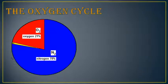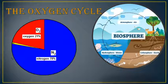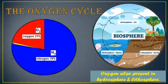Oxygen forms 21% of the atmosphere, and the rest is other gases. It is also present in the hydrosphere and lithosphere. Hydrosphere means water, lithosphere forms the earth, and atmosphere means the mixture of gases that is air. So oxygen is also present in the hydrosphere and lithosphere.